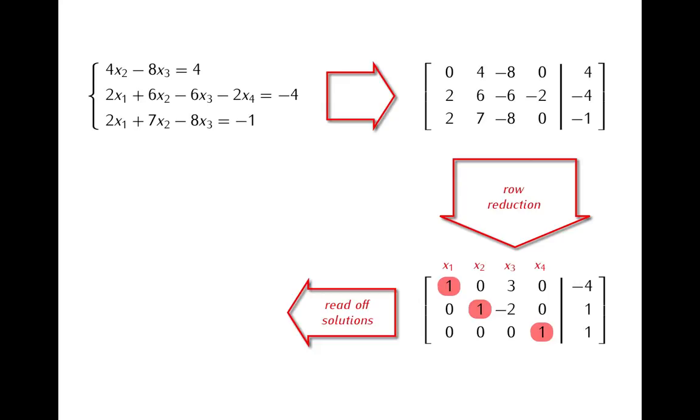And now what we see from this reduced matrix is, first of all, that this matrix has no leading one in the last column, the column of constants. Remember that what this means is that our system of equations is a consistent system, so this is a system that has a solution.